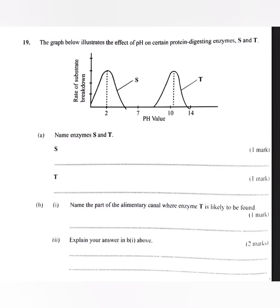The first question is saying: name enzymes S and T. They are asking you to give any enzyme which can operate under acidic medium. For enzyme S, I'm going to give trypsin, which works under acidic medium. For enzyme T, I'm going to give amylase, which categorizes carbohydrates under alkaline medium.